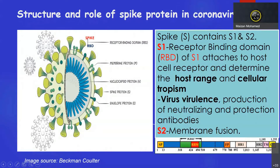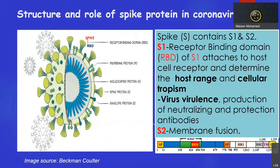The cartoon structure of the virus shows that it contains membrane protein, nucleocapsid protein, envelope protein, and spike protein. The spike protein contains spike 1 and spike 2. Spike 1 contains the receptor binding domain on the surface, which attaches to the host cell receptor and determines the host range and cellular tropism.